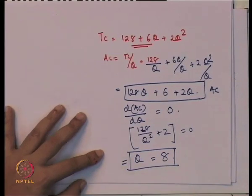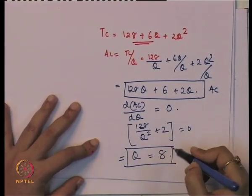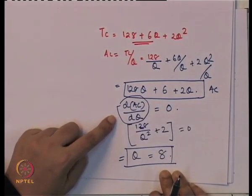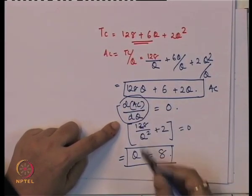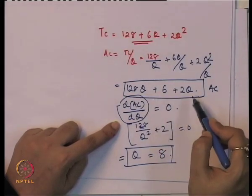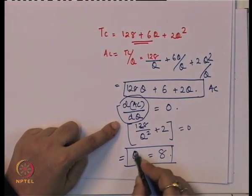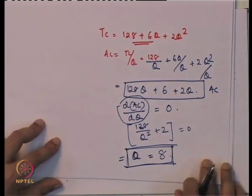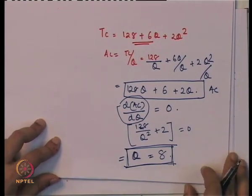When Q = 8, average cost is at its minimum. We can verify this using the same cost function by finding marginal cost and setting it equal to average cost, to check whether we get the same level of output. So, taking the same cost function TC = 128 + 6Q + 2Q², we find the marginal cost by taking the first order derivative of total cost with respect to Q.